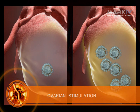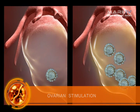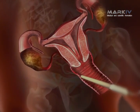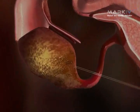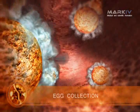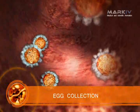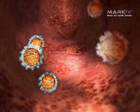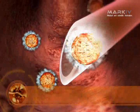Ovulation — the release of a mature egg from an ovary — normally happens by the action of the body's own hormones, which stimulate one egg to mature and release each month. In in vitro fertilization, the ovaries are stimulated by hormonal injection in order to obtain more eggs.